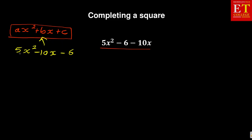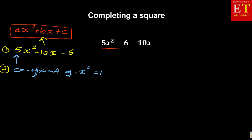The second thing you need to know when completing a square is that the coefficient of x squared must be equal to 1 — there must be no number except a 1. So if you are given a problem like this, we are going to take out a 5 by factorizing. When you take out 5, you get x squared, and 10 divided by 5 gives minus 2x, and minus 6 divided by 5 gives minus 6 over 5.